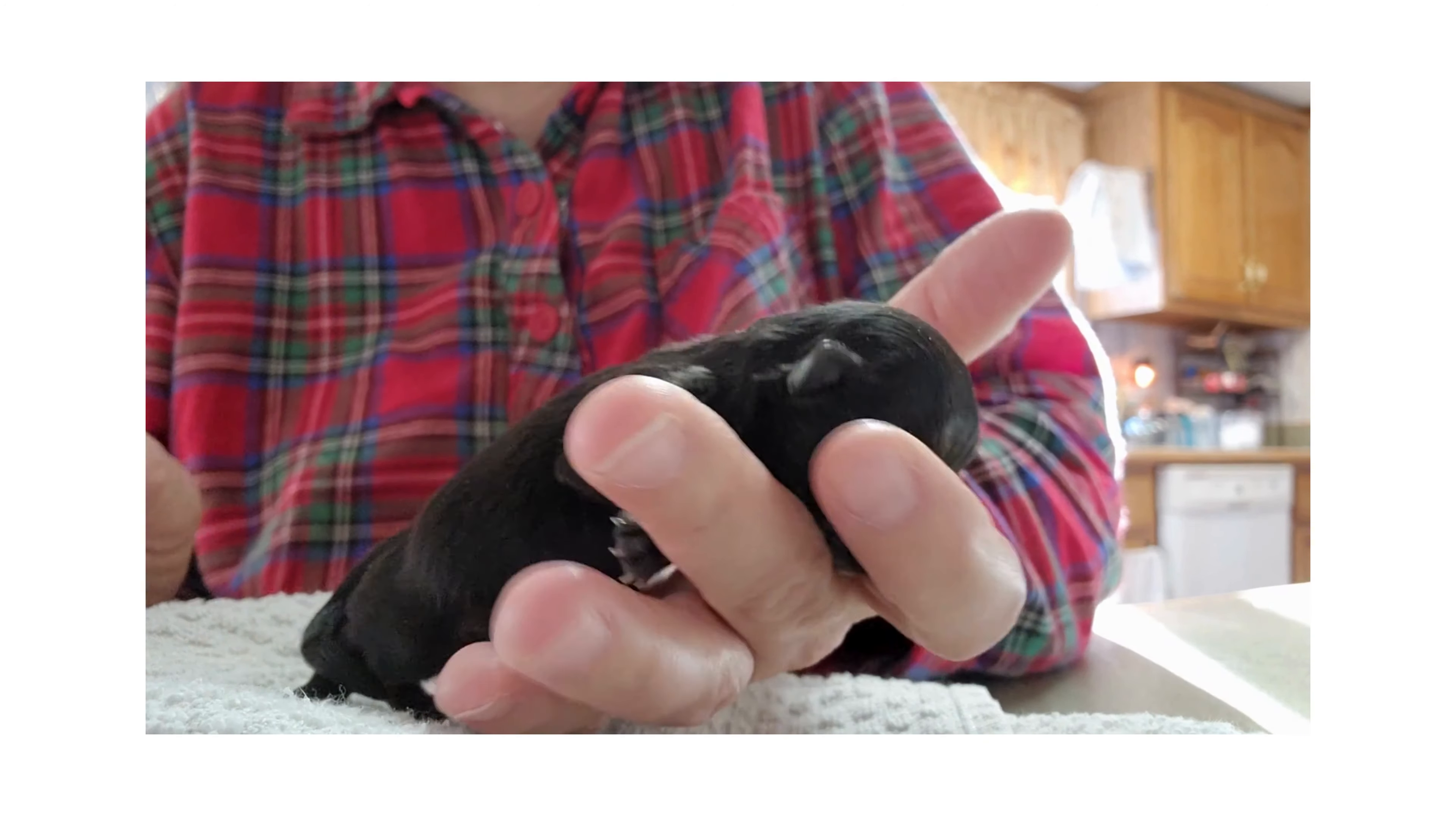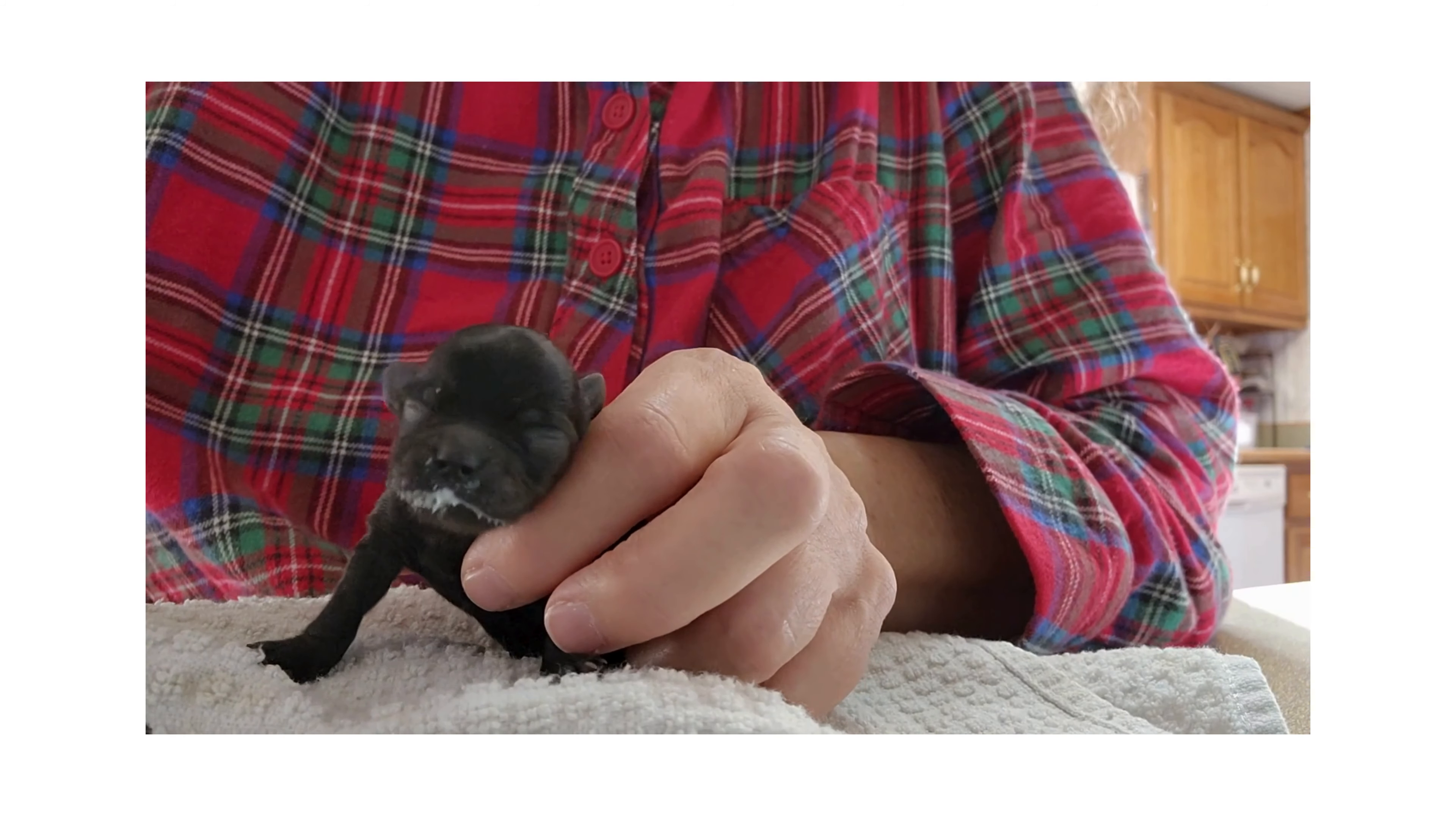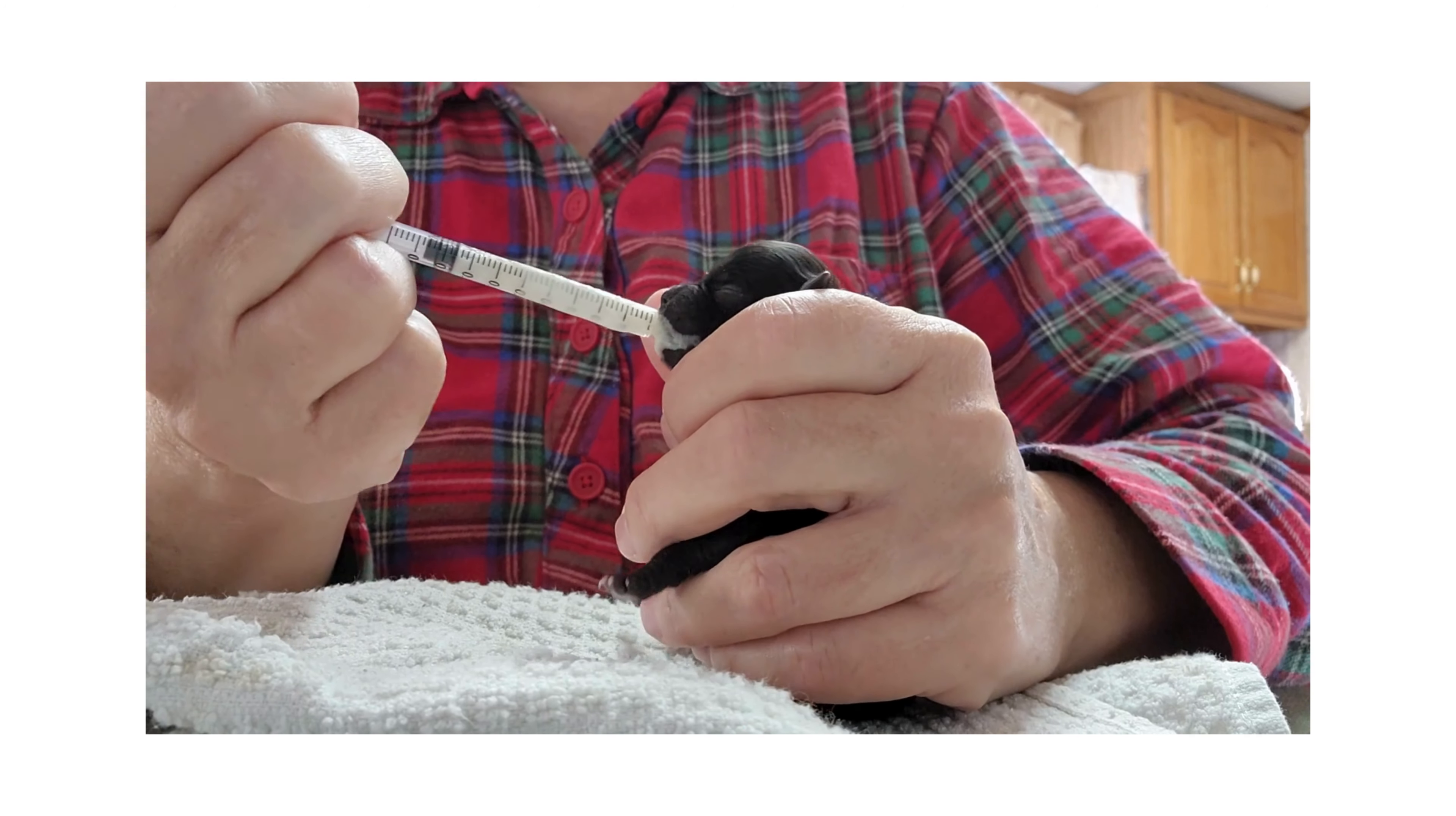As you can see, he's very tiny. He was just under three ounces when he was born. Ready for some more? Come on. He usually eats three syringes. Typically when you're hand raising puppies, you feed one cc of formula per ounce of body weight. So this guy weighs three ounces and I feed him three ccs. I feed him three ccs every four hours.